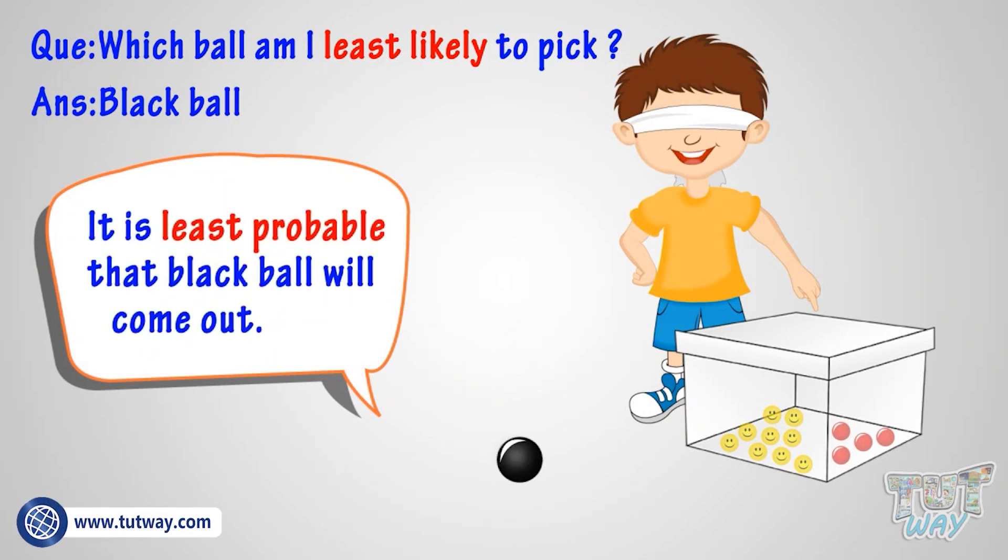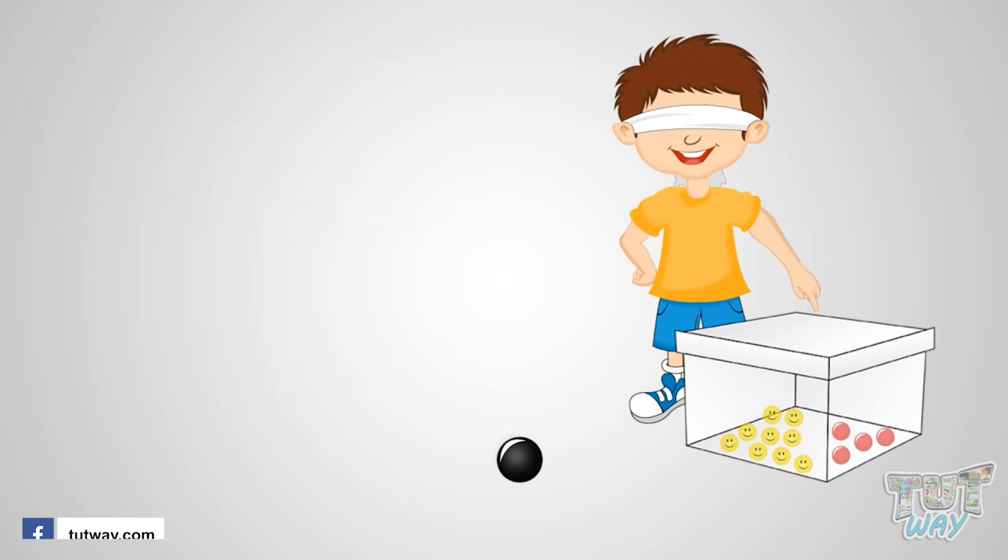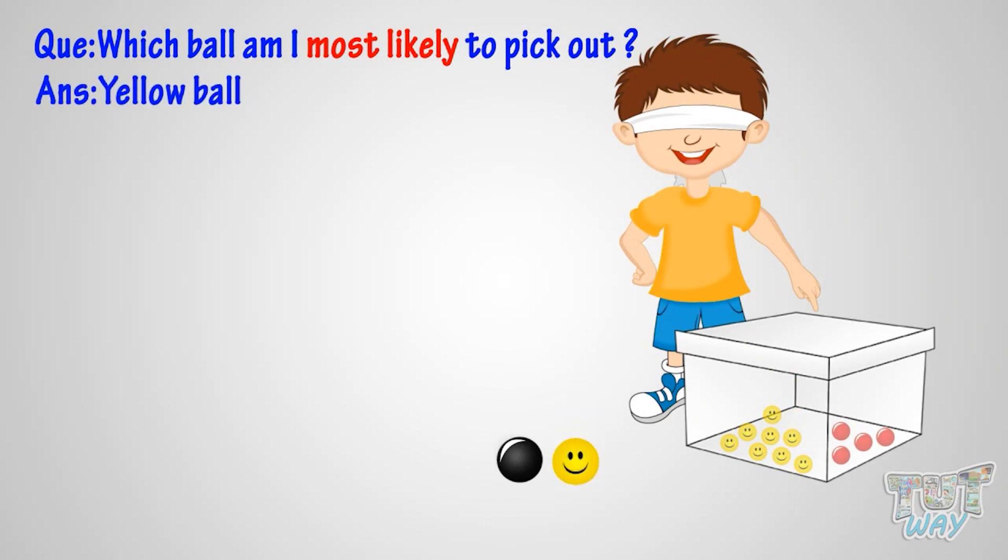So it is least probable that black ball will come out. Good. Now if I pick out any one ball from the box without looking into the box, which ball am I most likely to pick? Most likely: yellow ball.